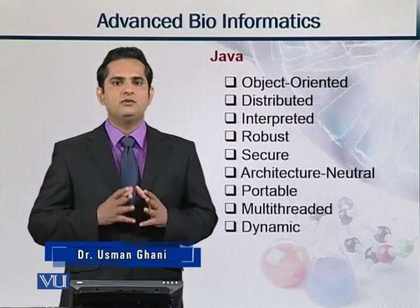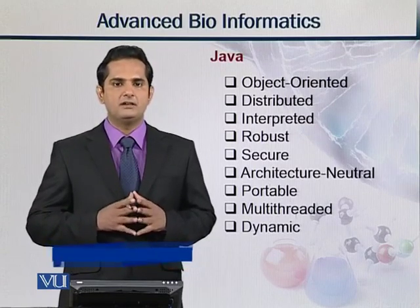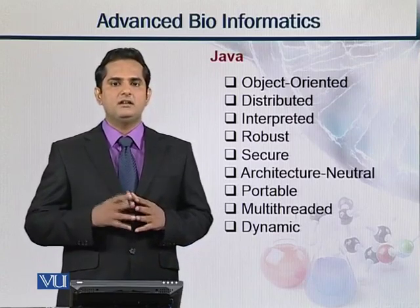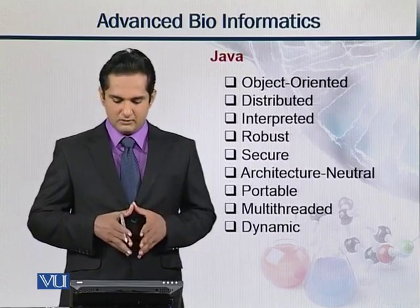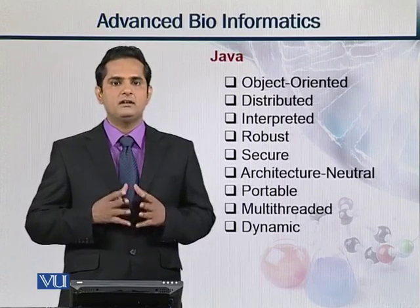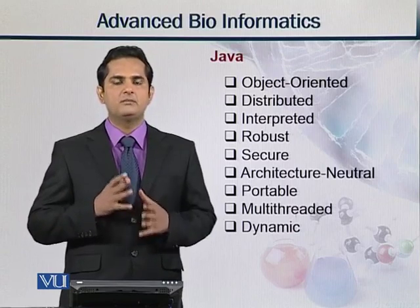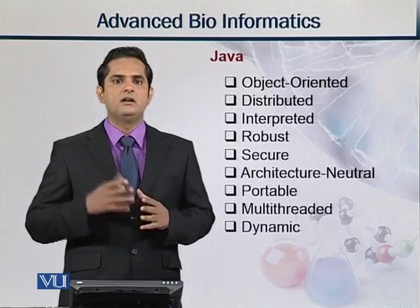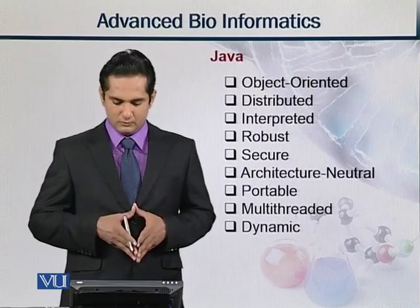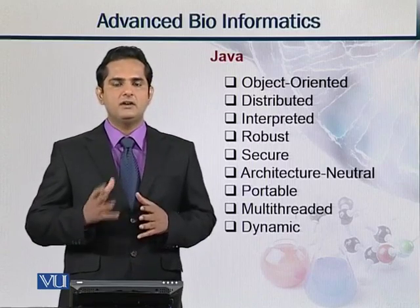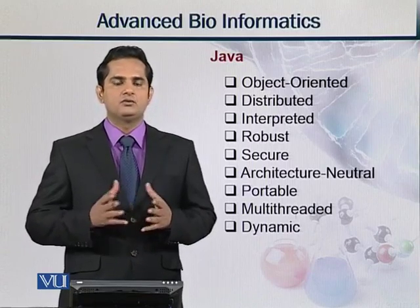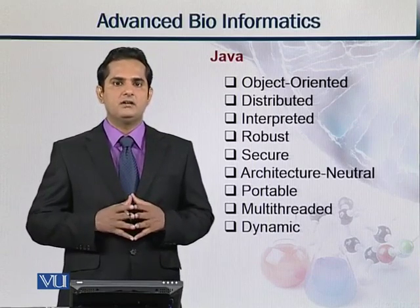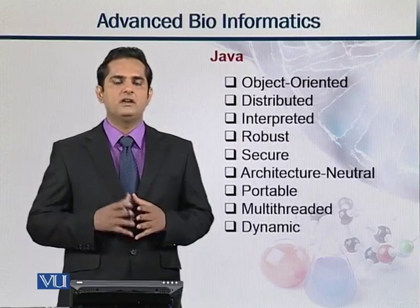Distributed means that we can divide the task performed by a Java program across multiple machines, so the task can be done in an efficient and fast manner. Java is also interpreted, robust, and secure — meaning code written by one developer remains in its own position and no one can interfere with that code. Additionally, Java is architecture neutral, portable, multi-threaded, and dynamic. You can look up these multiple advantages of Java on Google or Wikipedia for a deeper understanding of why Java is such an important language for programming and for bioinformatics.